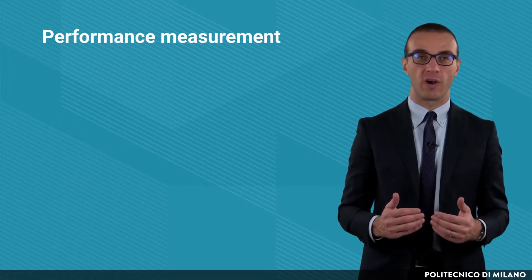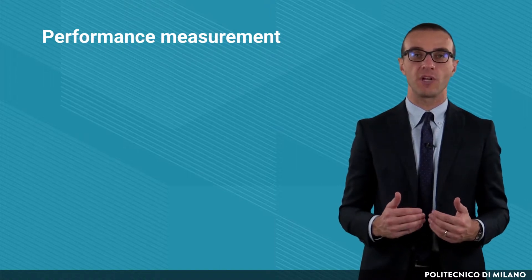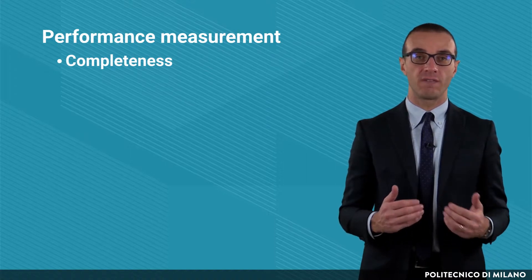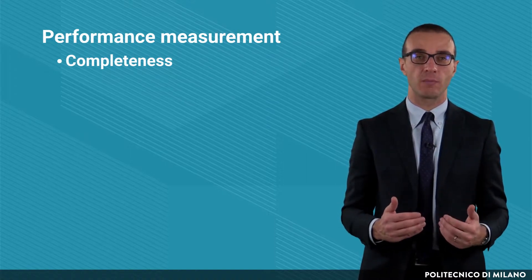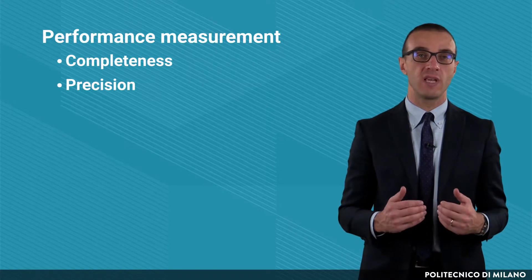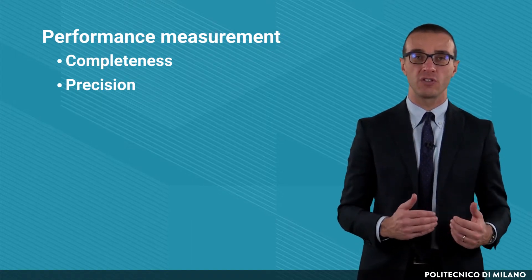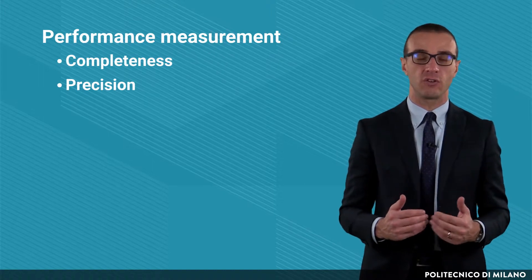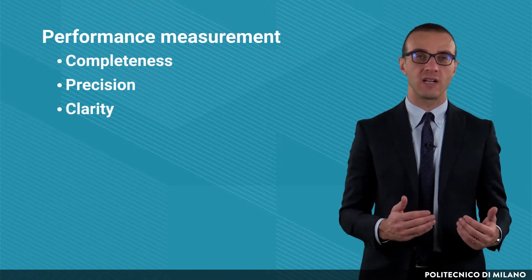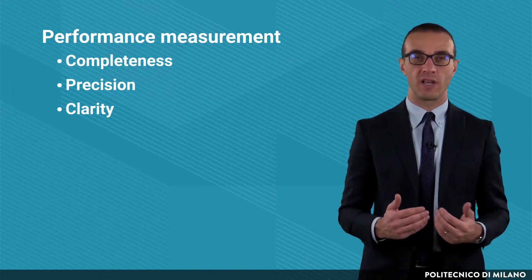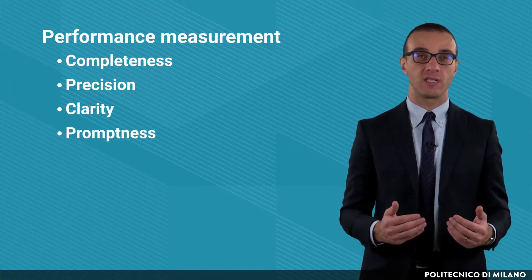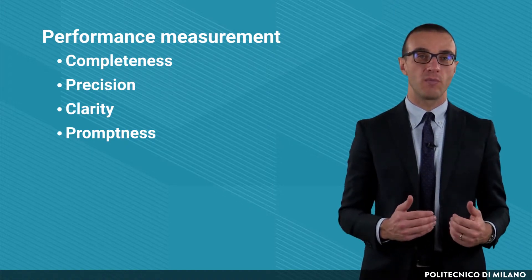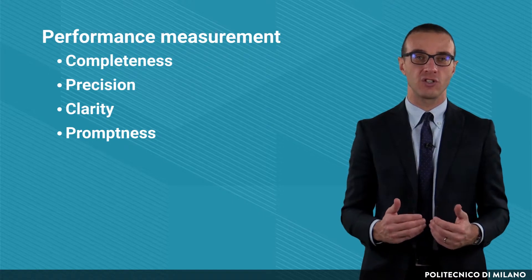In order to work properly, a performance measurement system should respect some requirements. Completeness: it has to consider all the factors that significantly impact performances. Precision: it has to be able to detect even small variations of performances, representing them through variations in the value of the indicator. Clarity: it has to provide results which are easily understandable by users. Promptness: it has to provide the results quickly, in order to be able to promptly apply eventual corrective actions.